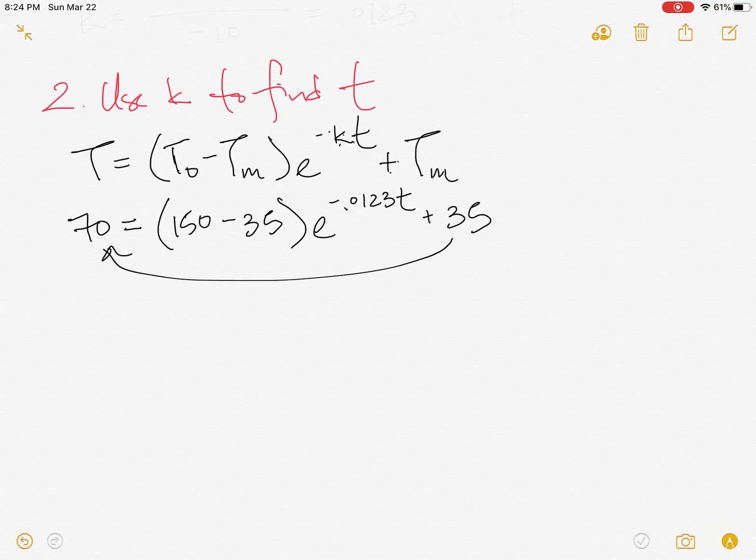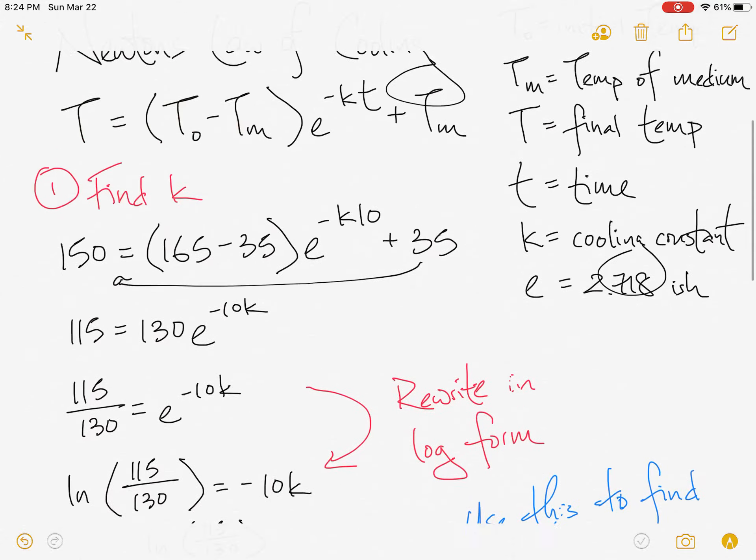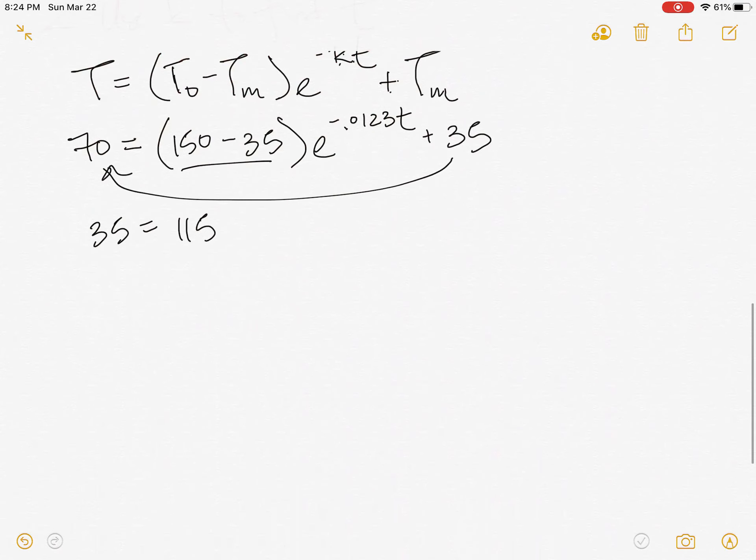Get 35 equals 115 e to the negative 0.0123t.